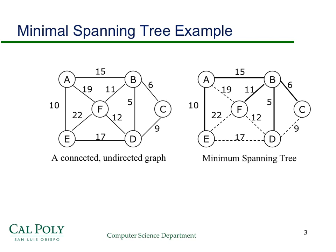Before going on, pause the screencast and think about what greedy algorithms you might come up with to find the minimum spanning tree. There are three natural ones — try to get at least one or two of them before continuing.